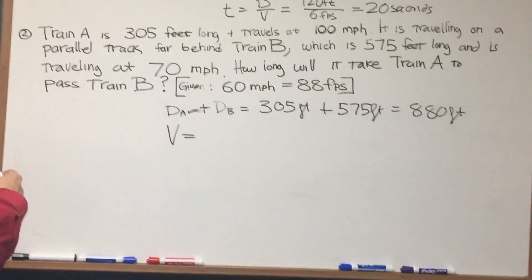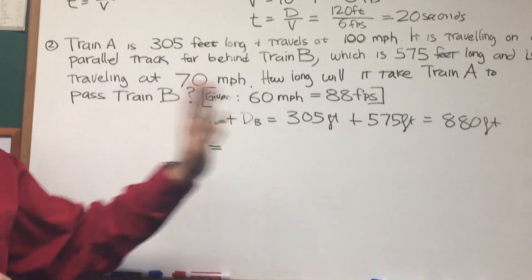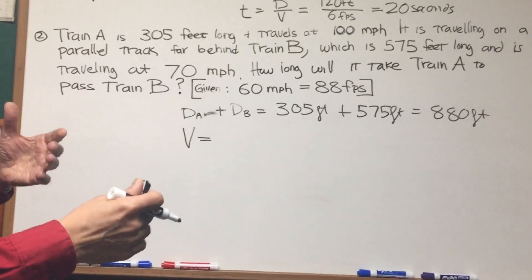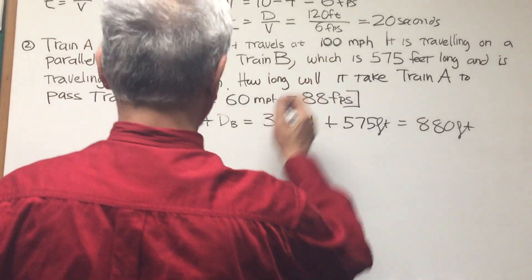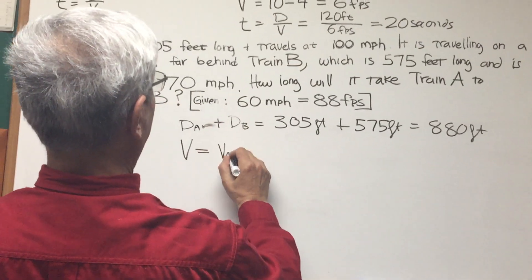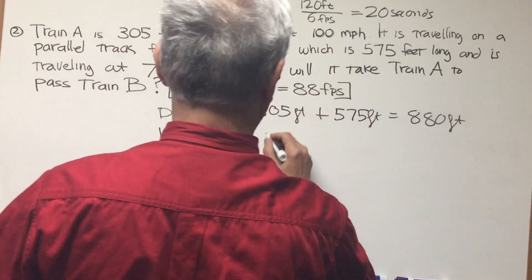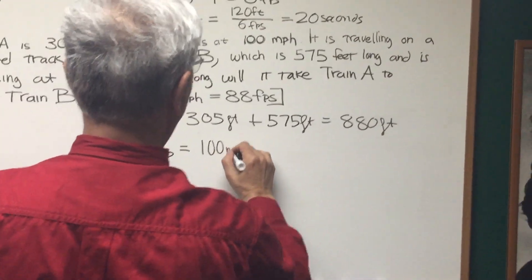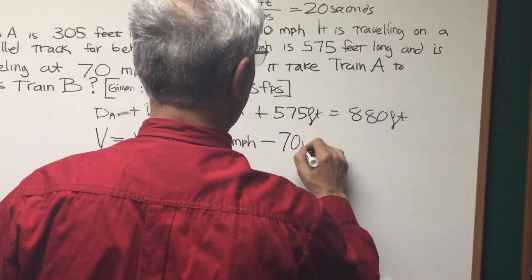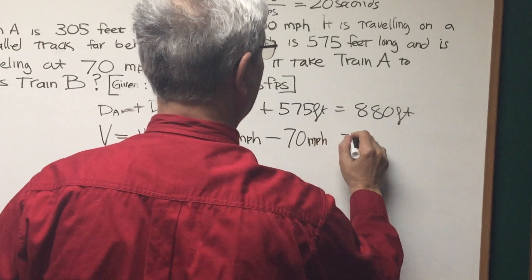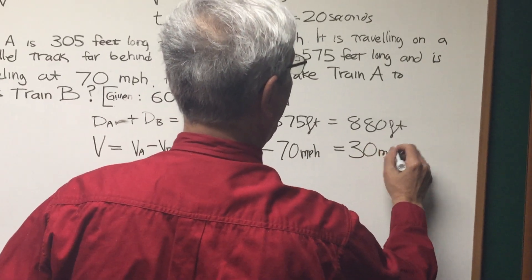What is the velocity? Again, we're looking for relative velocity, just like in the cat and dog problem. We're looking for the relative velocity between A and B, which is the difference in their velocities. Train A is traveling at 100 miles per hour and train B is traveling at 70 mph. That gives us a difference of 30 miles per hour.